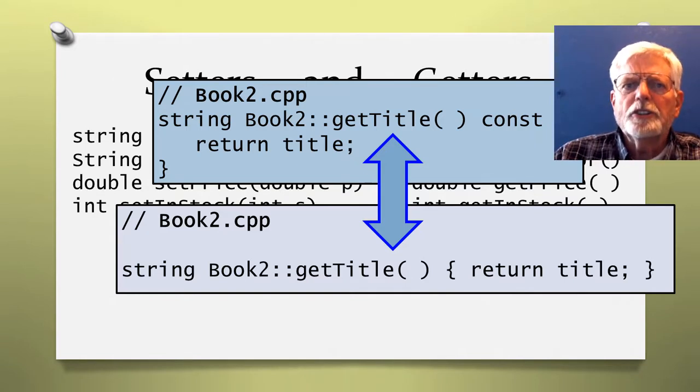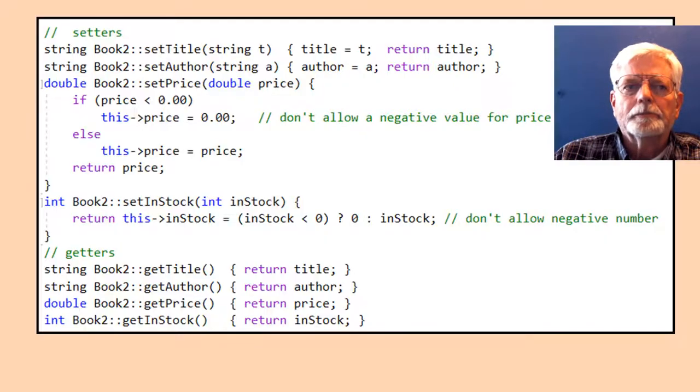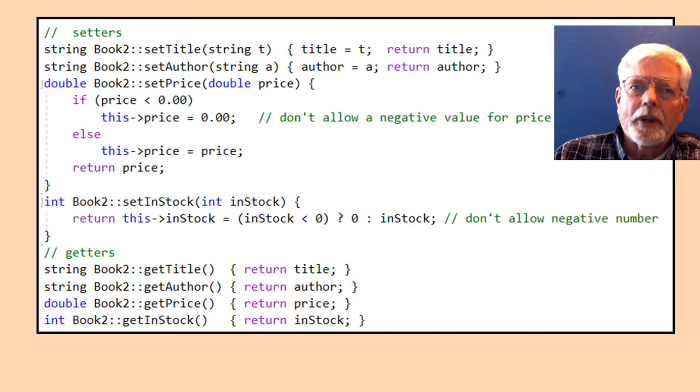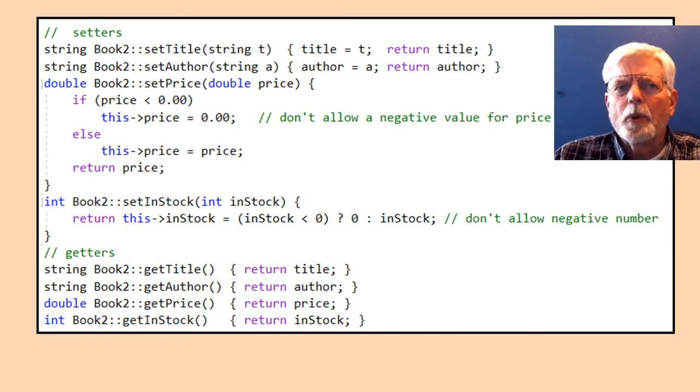The semicolon ends the return statement and is placed inside the block of code not after the closed curly brace at the end of the line. The setters and getters for the rest of Book 2 class member data will be coded similar to how setTitle and getTitle were coded. One of the differences will be the data types of variables.